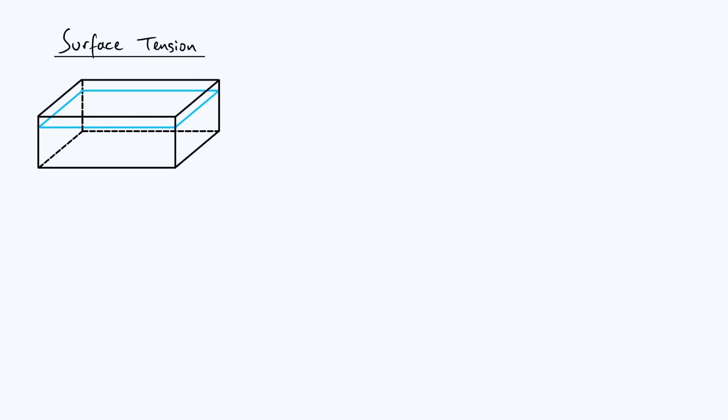As a starting point we'll consider the system I've sketched, which is just a cuboid-shaped container of liquid. The liquid is filled up to some height within the container, and you can see there's this upper surface of the liquid which I'm shading in blue.